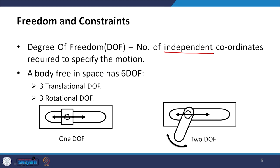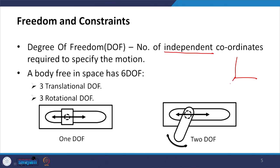A body in space has six degrees of freedom: three translational and three rotational degrees of freedom. We can describe an object's position with three coordinates x, y, z and its orientation with rotations about x, y, and z axes — totaling six degrees of freedom.